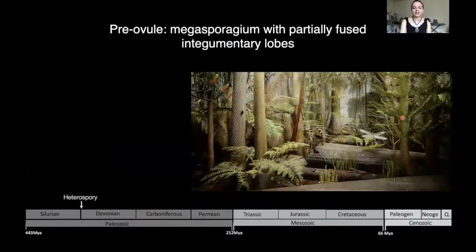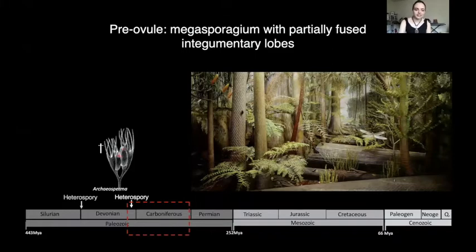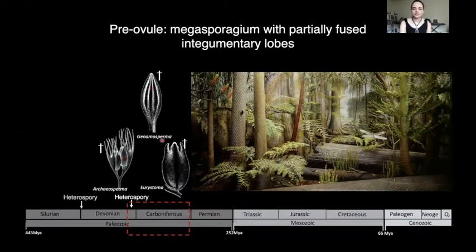Heterospory actually appeared and evolved multiple times during the evolution of vascular plants, and we see it nowadays in lycophytes and aquatic ferns. But it was finally retained by progenosperms and seed plants, which together form the lignophytes. All progenosperms are extinct, but one of the most well-known fossils is Archaeosperma, where we see megasporangia covered by integumentary lobes, partially fused. Within progenosperms, we also see all different degrees of fusion of those integumentary lobes, forming what we know now as a pre-ovule.